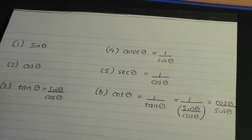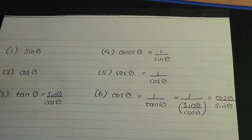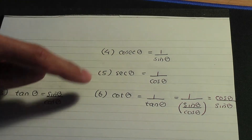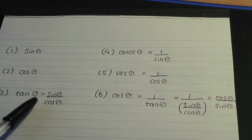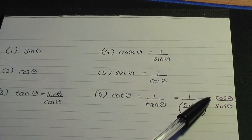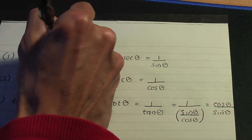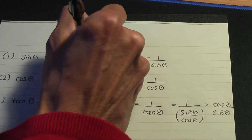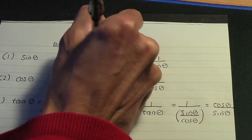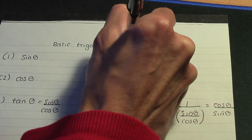So, these are our relations: sine, cos, and tan; cosec, sec, and cot. And remember, tan is sine over cos, and cot is cos over sine. So, here are our basic trigonometric ratios.